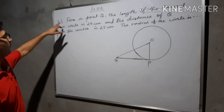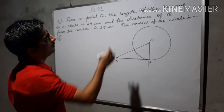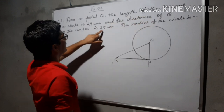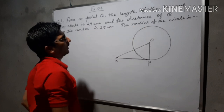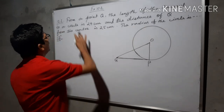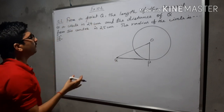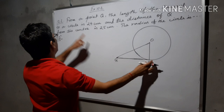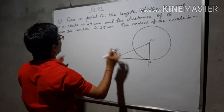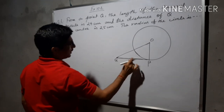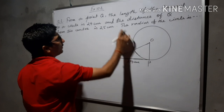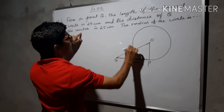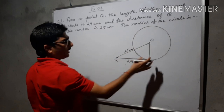Here question number one: From a point Q, the length of the tangent to a circle is 24 cm and the distance of Q from the center is 25 cm. The radius of the circle we have to find out. Here in this question, from an external point, a tangent can be drawn from an external point only. This Q point — the length of the tangent is given, and the distance of Q from the center is 25 cm. This is a plain question.